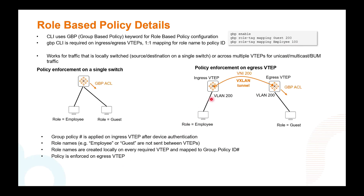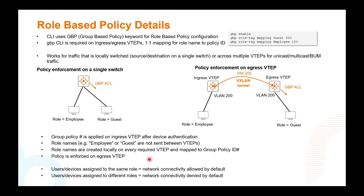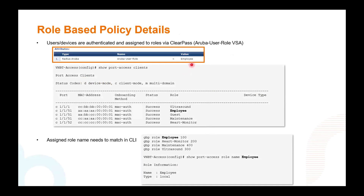Ingress handles authentication; egress handles policy enforcement. If you have devices on the same role, connectivity is allowed by default — for example, two employees. If the roles are different, such as employee and guest, that is denied by default.